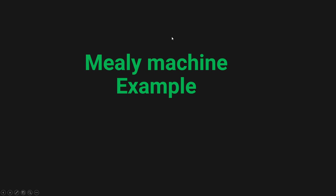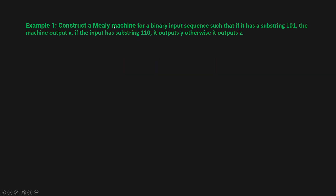Hey guys, welcome to another theory of computation tutorial. Today we will be looking at another example of a Mealy machine, so let's get started. The example is: construct a Mealy machine for a binary input sequence such that if a substring 101 is there, the machine output should be x; if the input has substring 110, the output should be y; otherwise the output should be z.